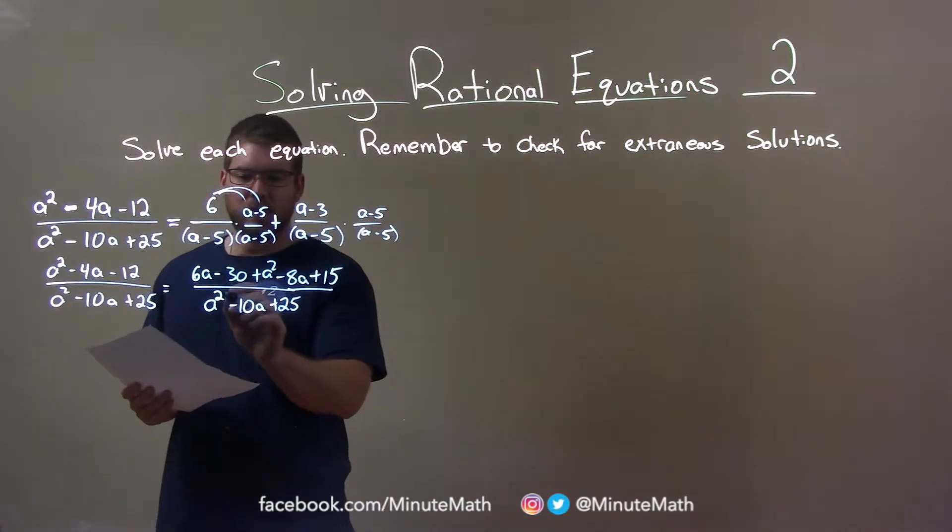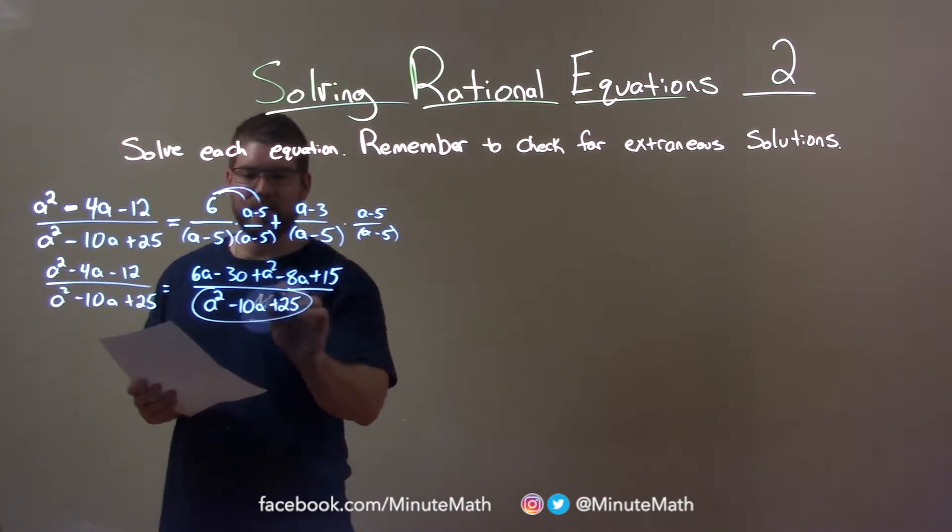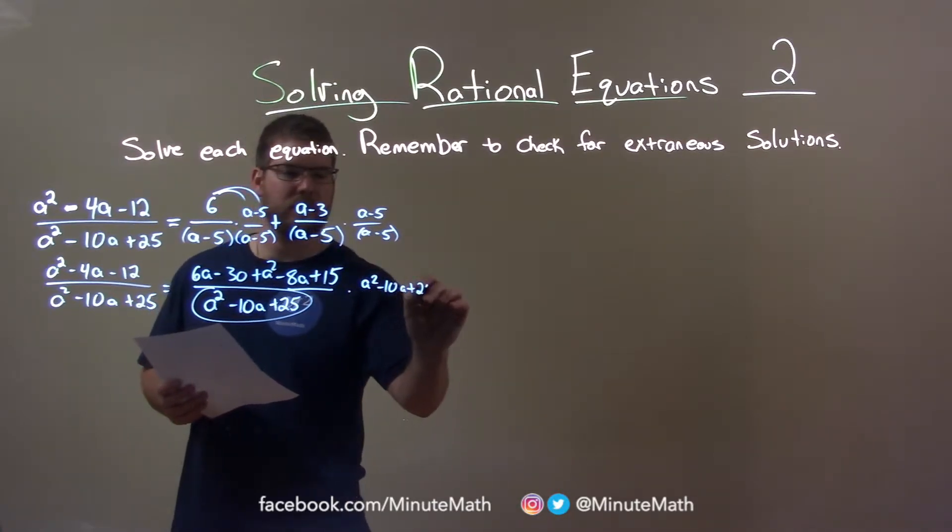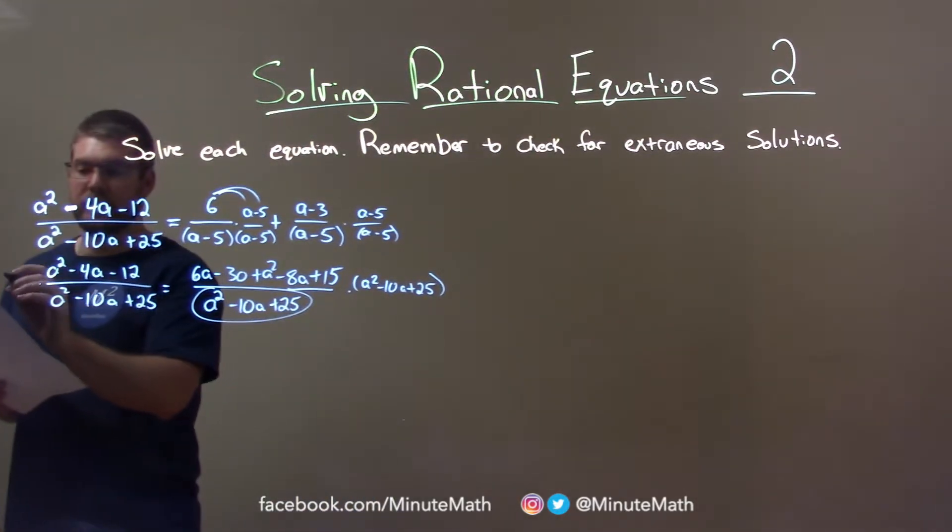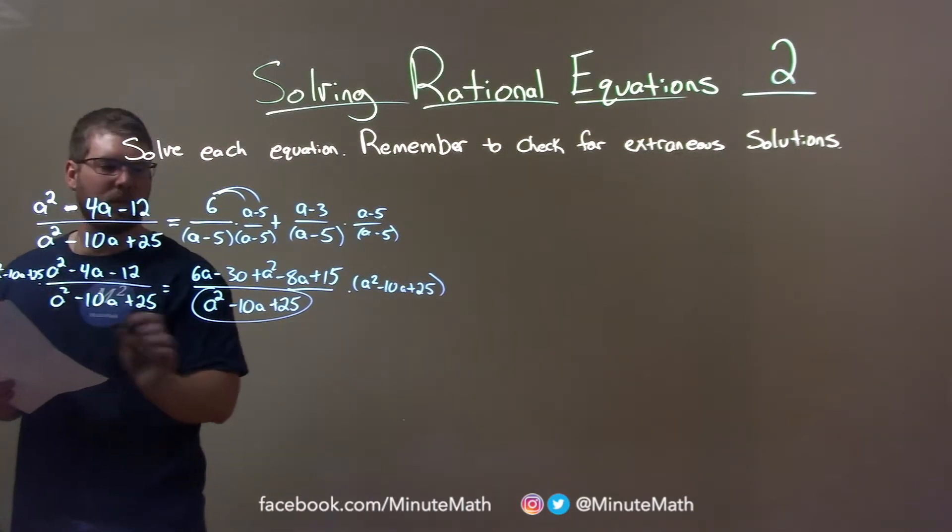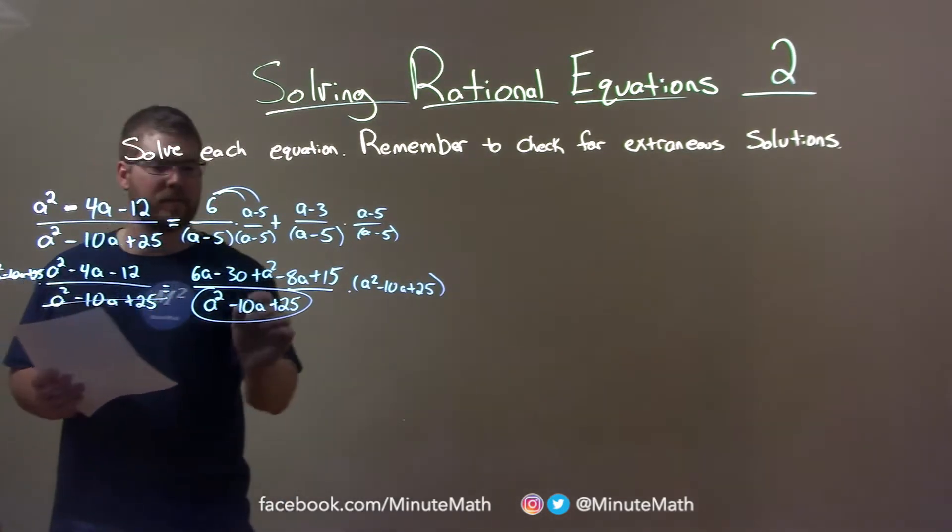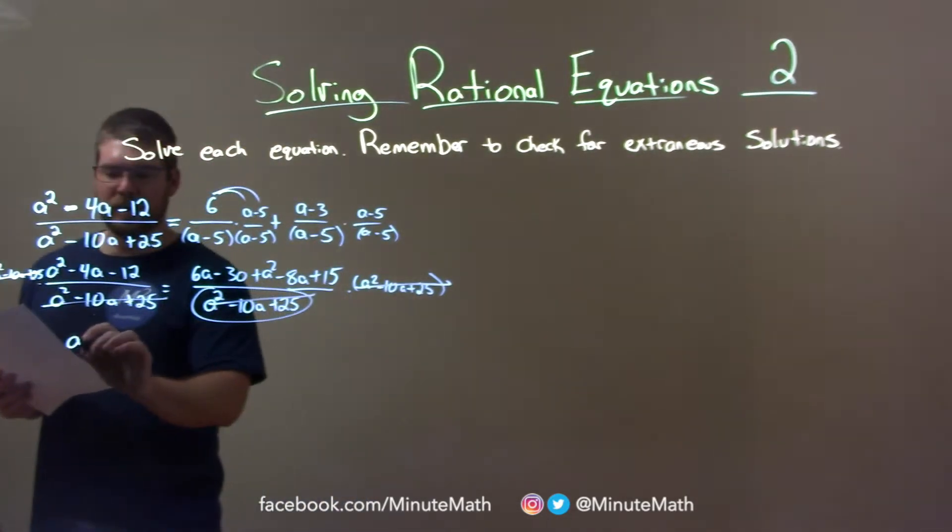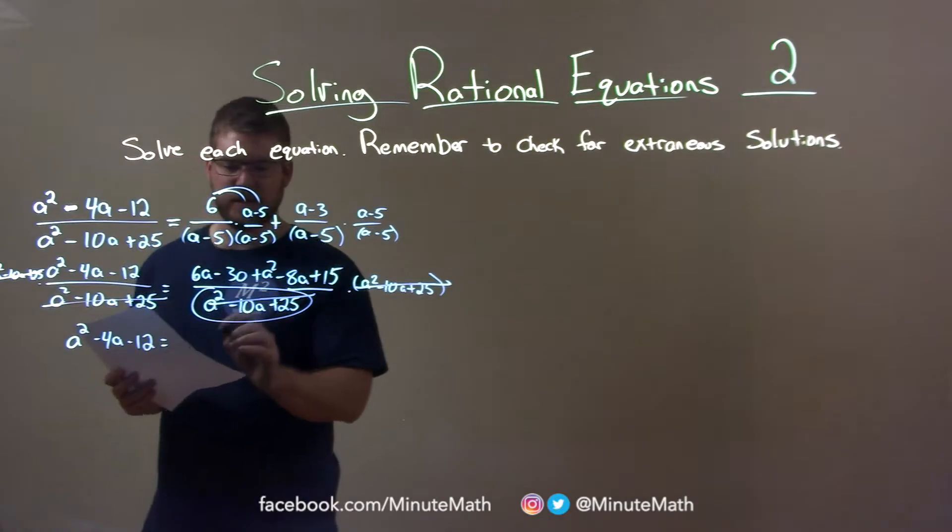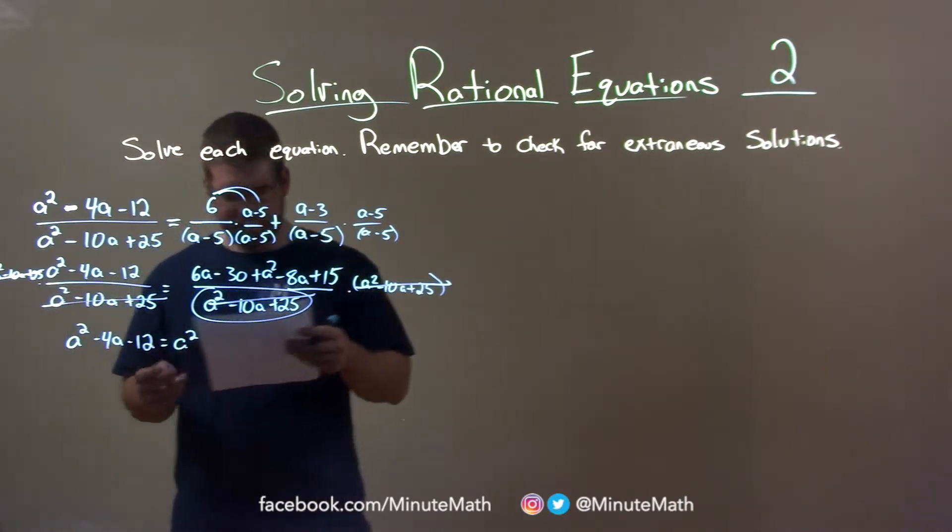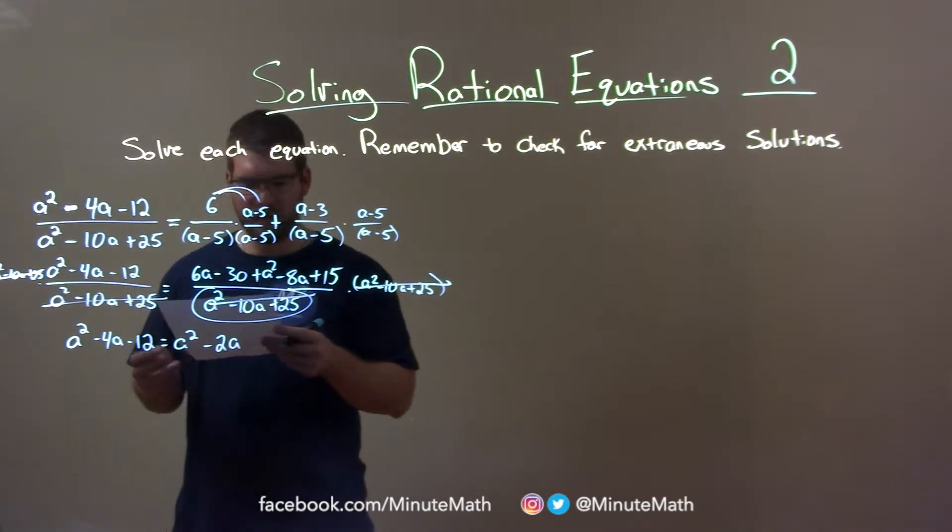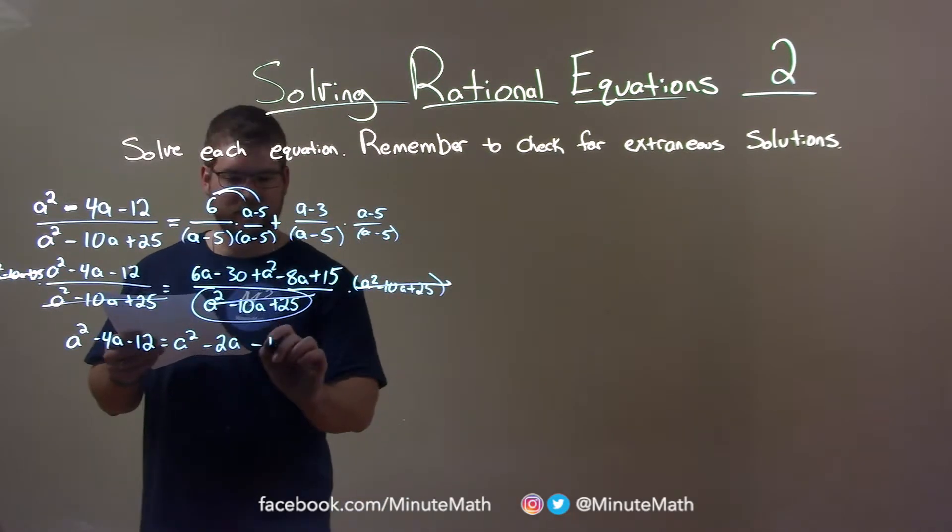I'm going to multiply both sides by this denominator right here. It's going to cancel because they're the same. And now I'm left with just a squared minus 4a minus 12 is equal to... let's combine the like terms. Only one a squared here. 6a and negative 8a is minus 2a. And minus 30 plus 15 is minus 15.